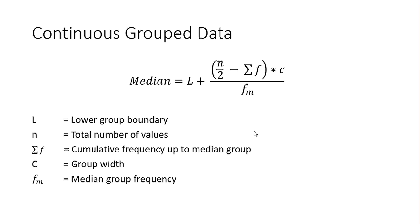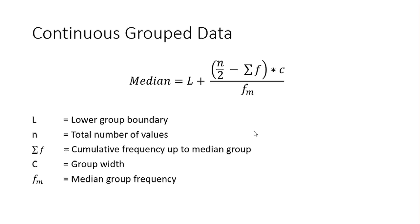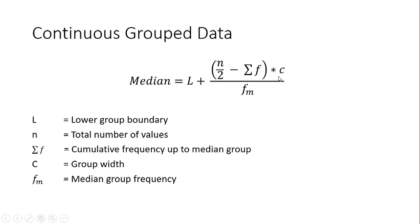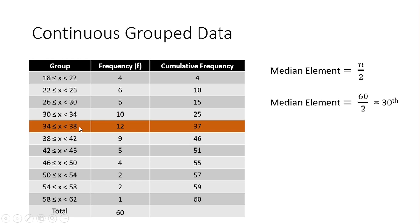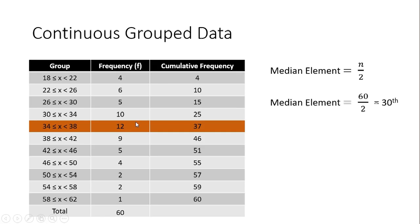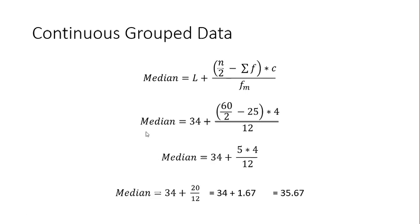The formula is: Median = L + ((n/2 − Σf) / fm) × c, where L is the lower group boundary (34 in this case), n is the total number of values (60), Σf is the cumulative frequency up to the median group (25), c is the group width (38 − 34 = 4), and fm is the median group frequency (12).